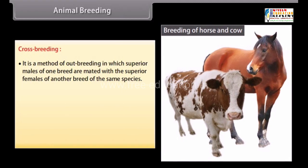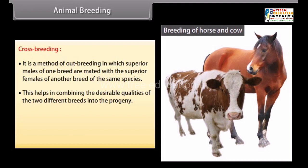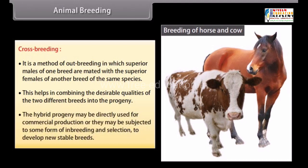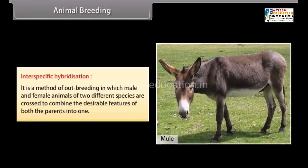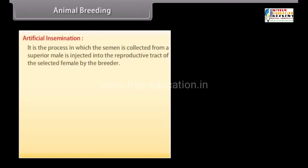Crossbreeding is a method of outbreeding in which superior males of one breed are mated with superior females of another breed of the same species, combining desirable qualities into the progeny. One example is Hisardale, a new breed of sheep developed by crossing Bikaneri ewes and Merino rams. Interspecific hybridization crosses male and female animals of two different species — for example, a mule produced by crossing a male donkey and a female horse.